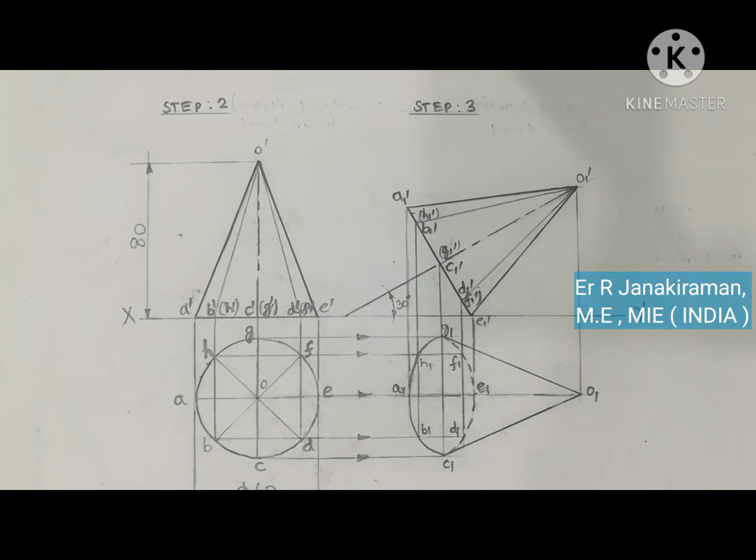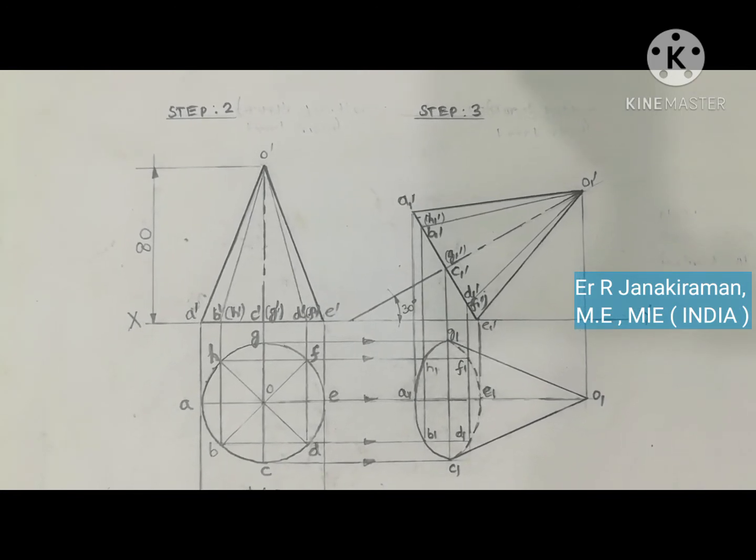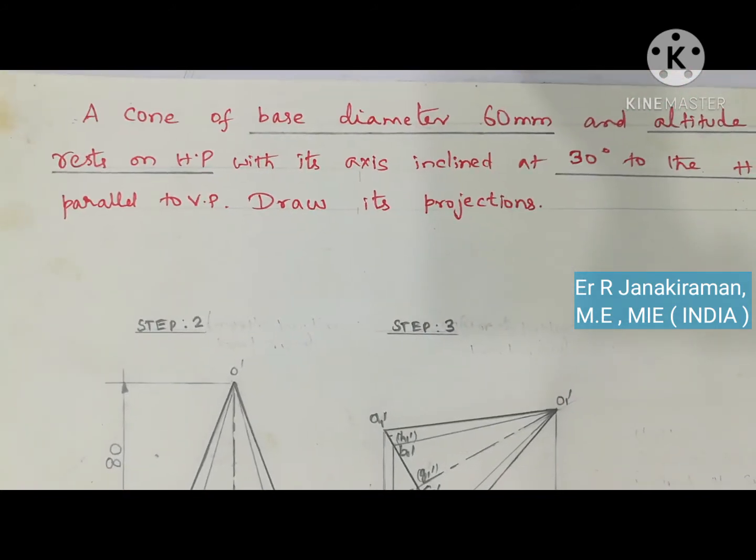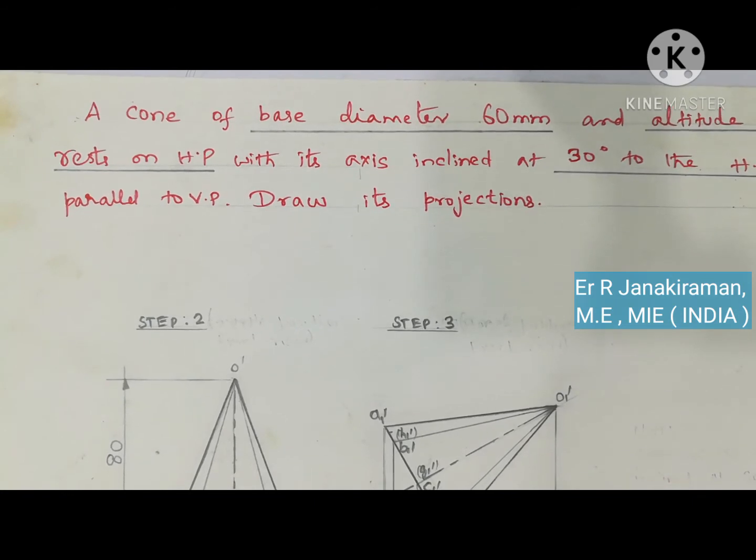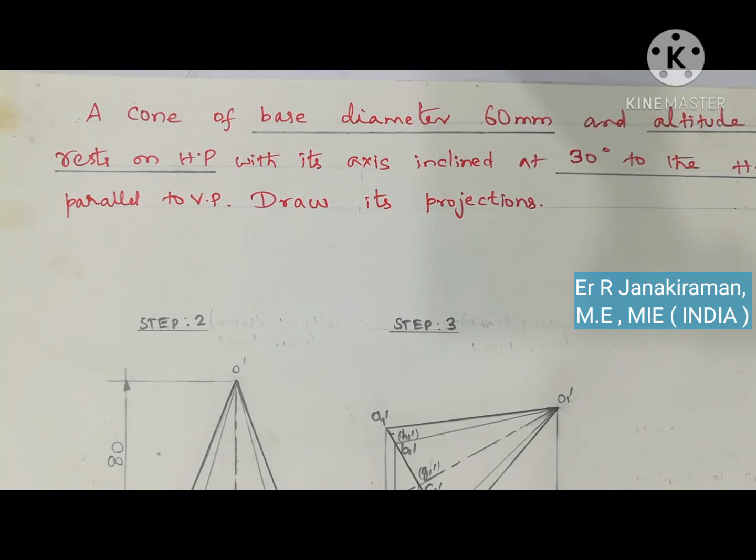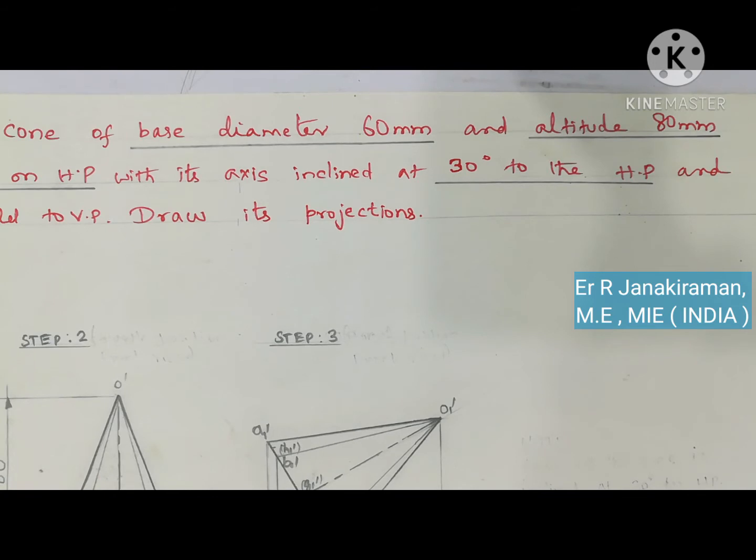So this is the drawing called the answer diagram that appears when drawn on the drawing sheet. So it is a cone of base diameter 60 mm. The scale followed is reduced scale. 60 mm and altitude is 80 mm, it will be bigger in size. So you can follow whatever the size given in the question.